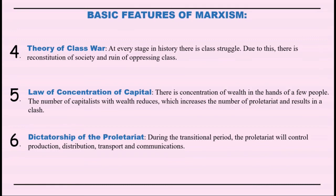The sixth feature is the Dictatorship of the Proletariat. The hostility between the bourgeoisie and the proletariat results in a revolution in which capitalists will be overthrown and the dictatorship of the proletariat will be established. In the transitional period, the proletariat will capture all capitalist property, abolish all rights of inheritance, and centralize the means of production, distribution, transport, and communication. The worker will be paid according to his work.